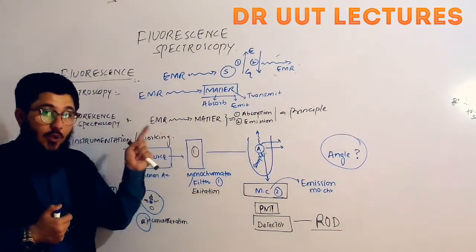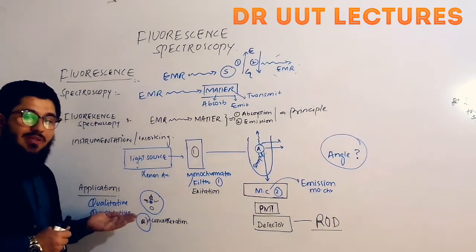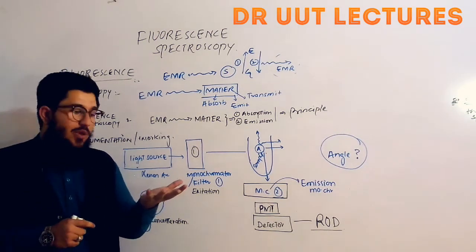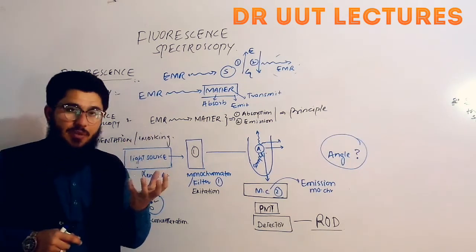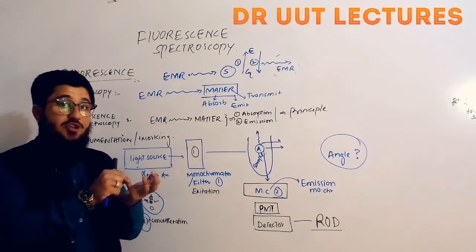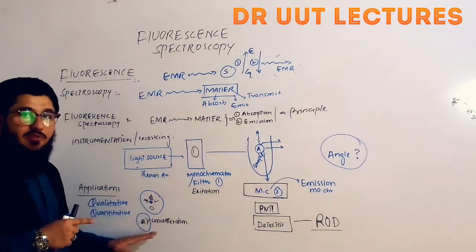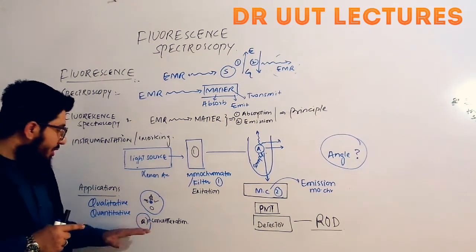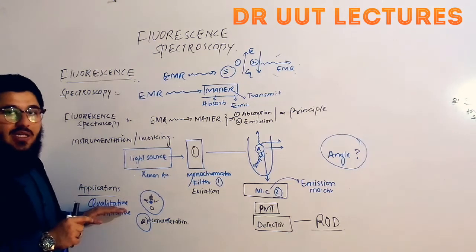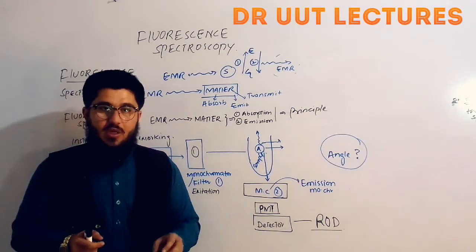Using this process, we can do two types of analysis, which are the applications of fluorescence spectroscopy: qualitative and quantitative analysis. In qualitative analysis, we take a sample and can identify several types of elements present in it. In quantitative analysis, we take a specific element and identify its concentration. So qualitative analysis identifies which elements are present, and quantitative analysis determines the concentration of a particular element. Both types of analysis can be performed using fluorescence spectroscopy.